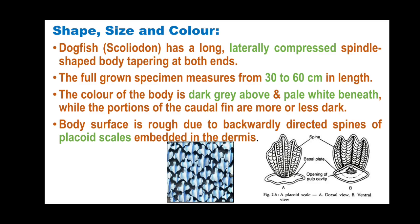The skin of Scoliodon consists of placoid scales which are backwardly directed. The structure of placoid scales includes a basal plate at the base, with a pulp cavity at the center — the pulp being soft tissue. The other parts of the placoid scale are hard, but the center contains this pulp cavity, similar to the cavity seen in our own teeth.